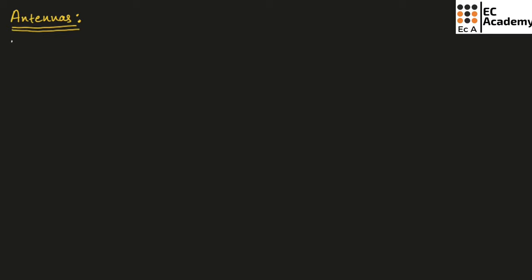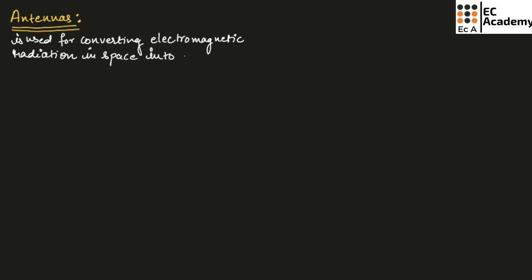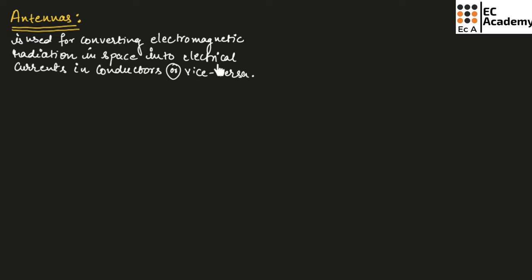An antenna is a device that is used for converting electromagnetic radiation in space into electrical current in conductors, or vice versa. This means the antenna will convert electromagnetic radiation into electrical currents and also convert electrical currents into electromagnetic radiation.